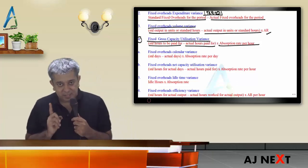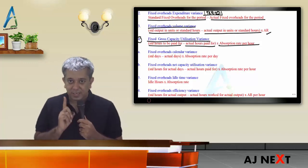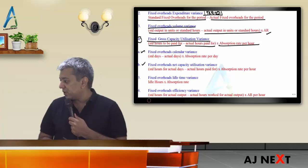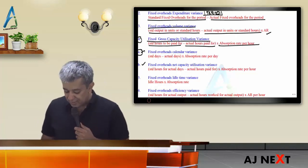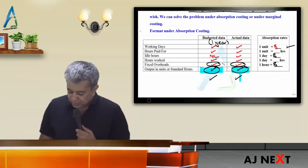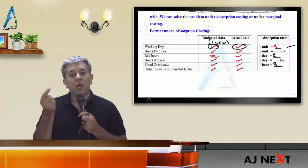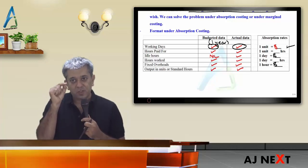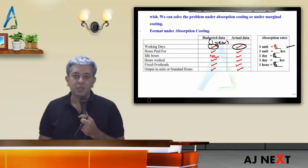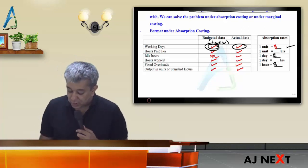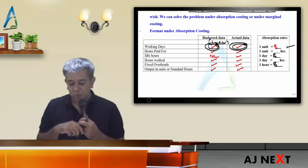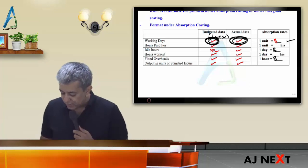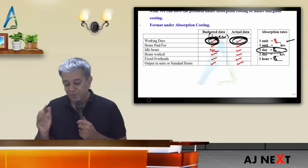If days data is present, the fourth variance splits into 4A and 4B. 4A is the fixed overheads calendar variance. Compute it as: standard days minus actual days, multiplied by absorption rate per day. If more days the factory opened, more hours came in, fixed overheads per unit fall — favorable. If fewer days, fewer hours, fewer units — fixed overheads per unit rise — adverse.